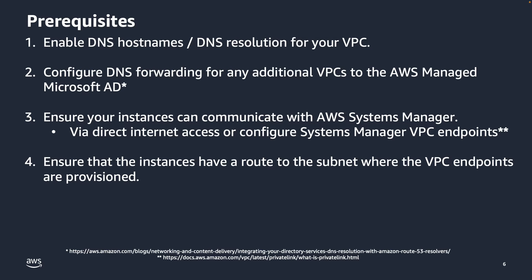Step one: enable DNS hostnames and DNS resolution in your VPC. Step two: configure the DNS in your VPC, and for any additional VPCs, to talk to the AWS Managed Microsoft AD. More information is available via the first link shown at the bottom of the screen.